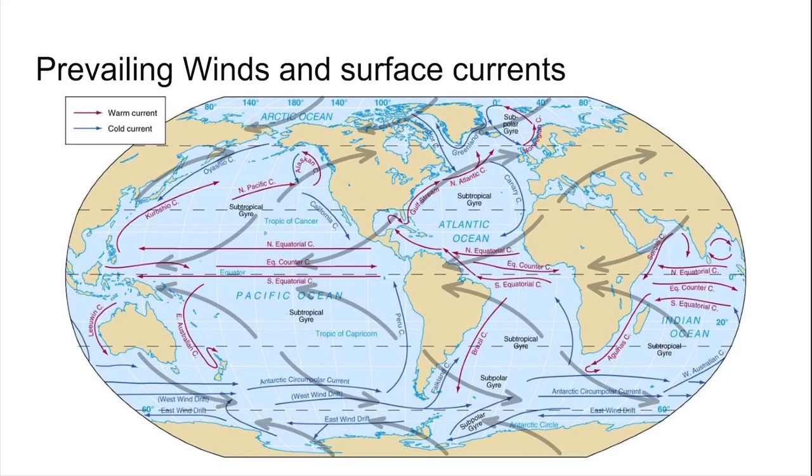For example, the south equatorial current, which goes between Africa and South America, is pushed along by the trade winds. But when that south equatorial current hits the coast of Brazil, that water is going to divide. Some of it will go to the north. Some of it will be bounced back towards Africa. And some of it will flow south towards Antarctica as the Brazil current.